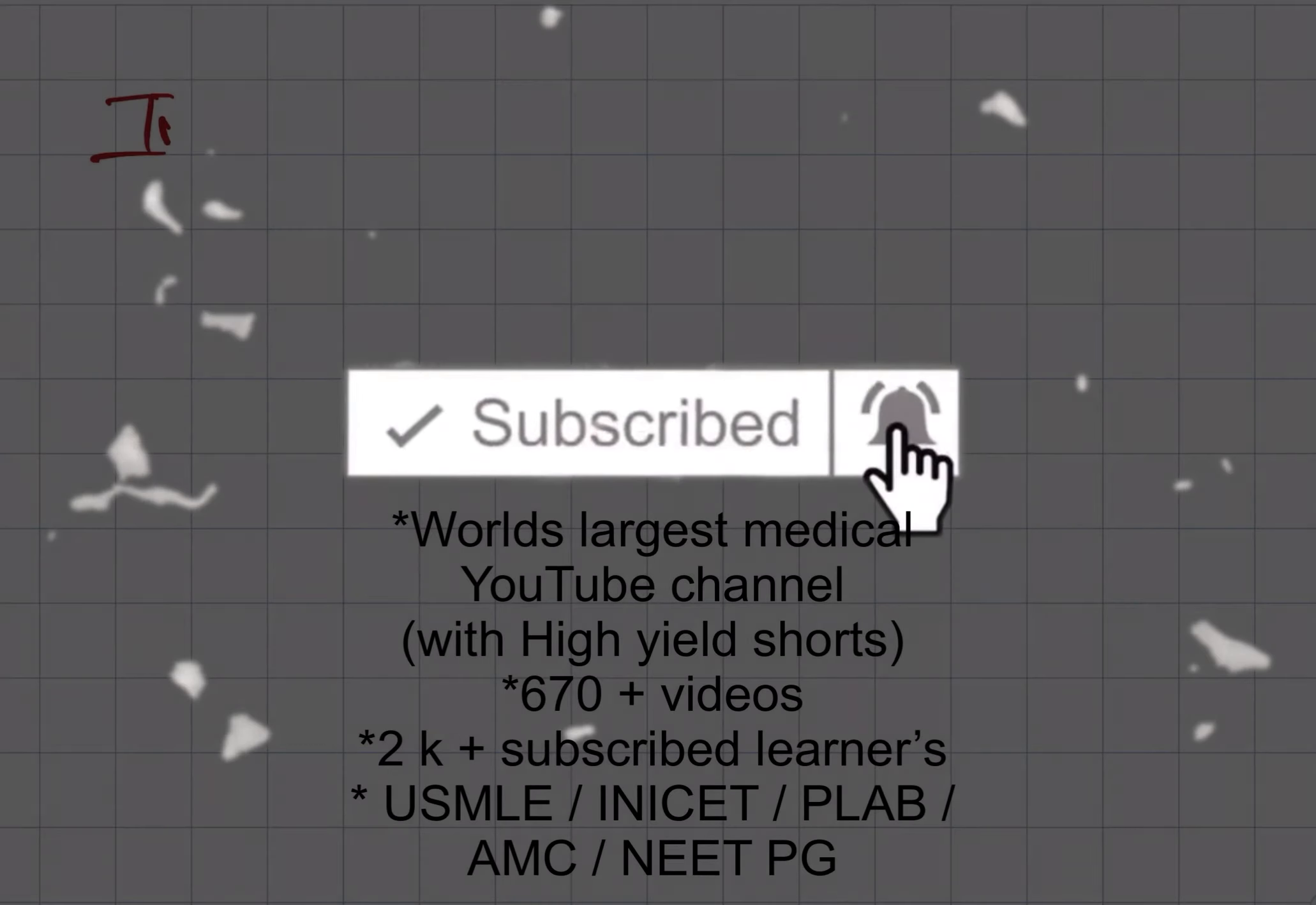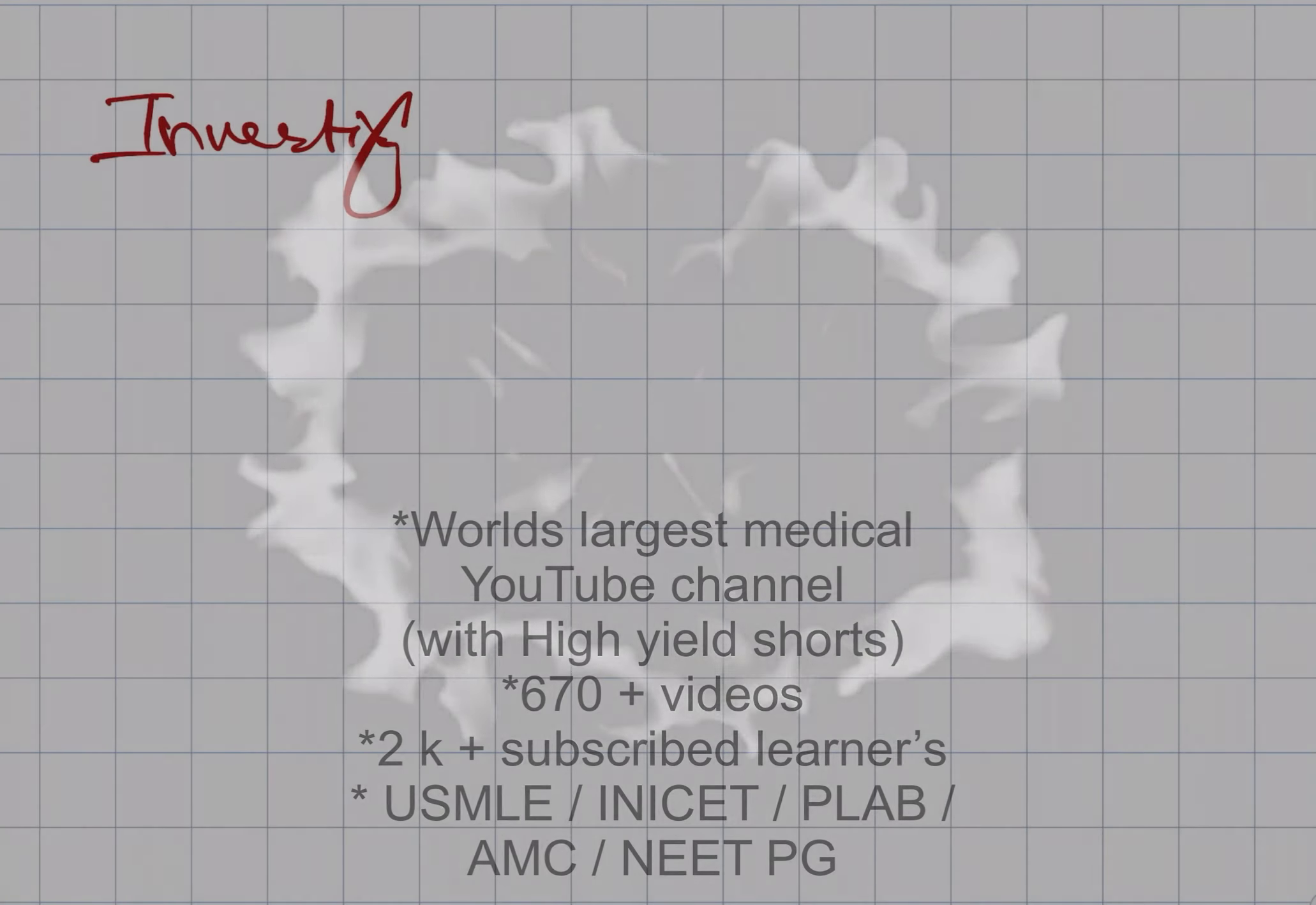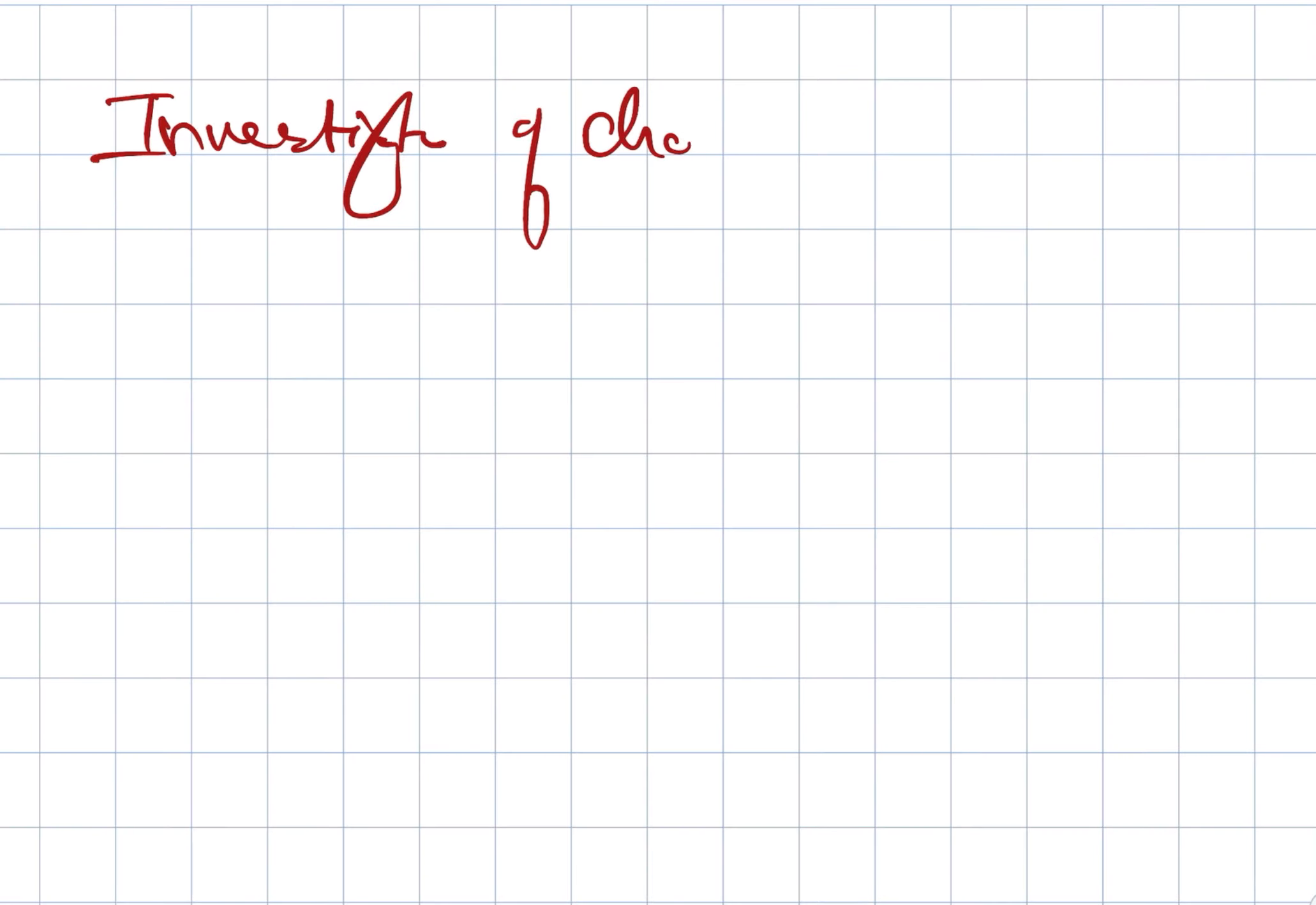Today we are looking at the investigation of choice specific to neurology. So firstly, MRI. MRI is used in cases of spinal cord and nerves. Here, the conditions it is used for: